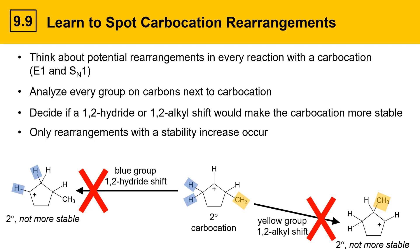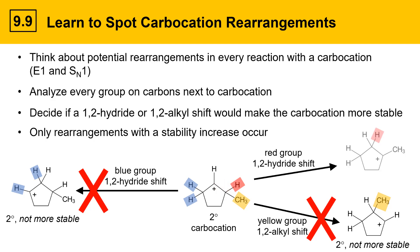Now let's take a look at the hydrogen that's next to the carbocation. If that group were to move over with its bonding pair of electrons in a 1,2-hydride shift, the result would be a tertiary carbocation, which is more stable. So this is a reaction that's going to happen because it's energetically favorable.